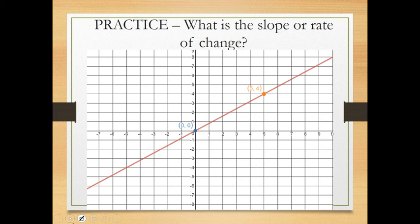Pause the video and see if you can find the slope or rate of change of this line. Slope is rise over run. To get from one point to the other: I go up 1, 2, 3, 4 — the rise is positive 4. Then I go to the right 1, 2, 3, 4, 5 — the run is 5. So the slope or rate of change of this line is 4/5.